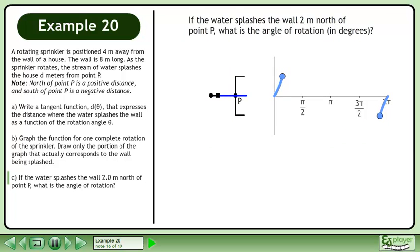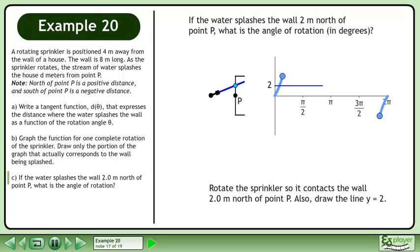Redraw the sprinkler and graph from part B. Rotate the sprinkler so it contacts the wall 2 meters north of point P. Also, draw the line y equals 2.